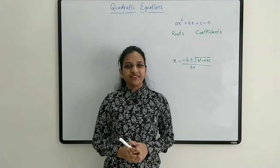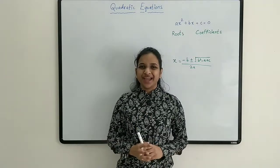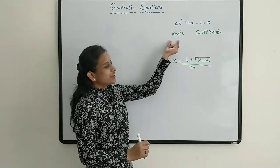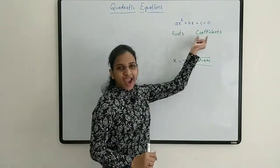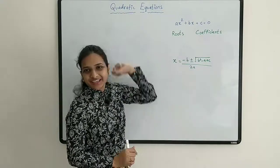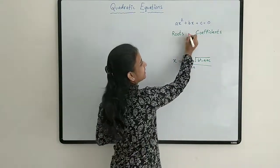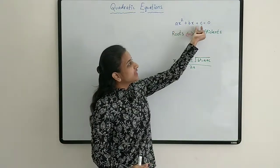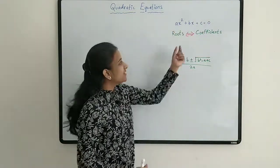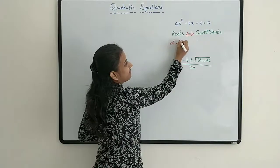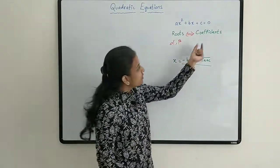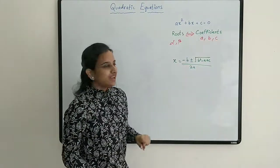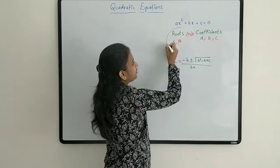Hello everyone, I'm Naneshwari Chidrawar, welcome to my channel Anytime Maths. In this video we are covering a very simple topic: the relation between roots and the coefficients of a quadratic equation. The general quadratic equation is ax² + bx + c = 0. If the roots of this equation are alpha and beta, and the coefficients are a, b, c, let's see what the relation between them is.